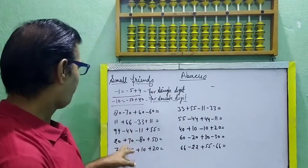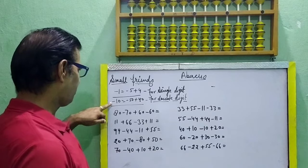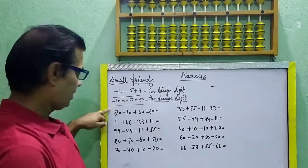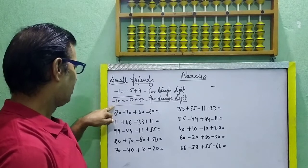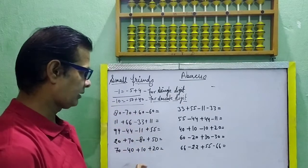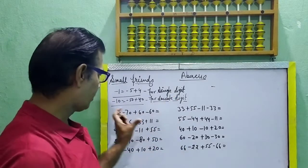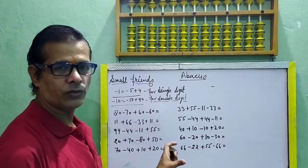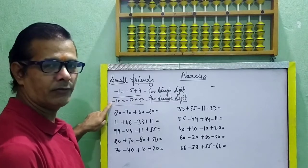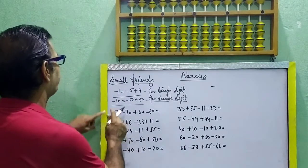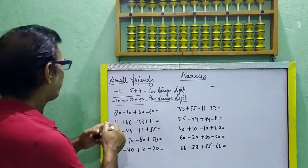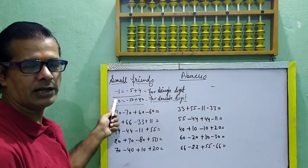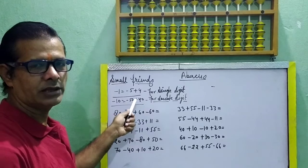Today's topic is double digit. Double digit means same formula, but for double digit questions. When your question is in double digit — jab aapki question double digit mein hai — don't be confused. Double digit means minus 10 is equal to minus 50 plus 40.